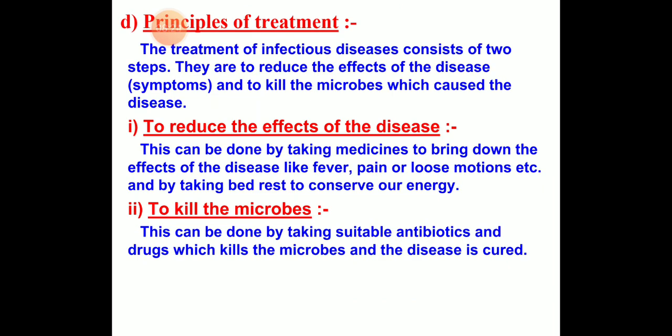Principle of treatment: The treatment of infectious disease consists of two steps. First, reduce the effect of disease — this can be done by taking medicines to bring down effects like fever, pain, or loose motion, or by taking bed rest to conserve energy. Second, kill the microbes — we have to take suitable antibiotics and drugs which kill the microbes and the disease is cured. Antibiotics are medicines or drugs which are prepared from microorganisms and used against them; they are very effective against microbes.